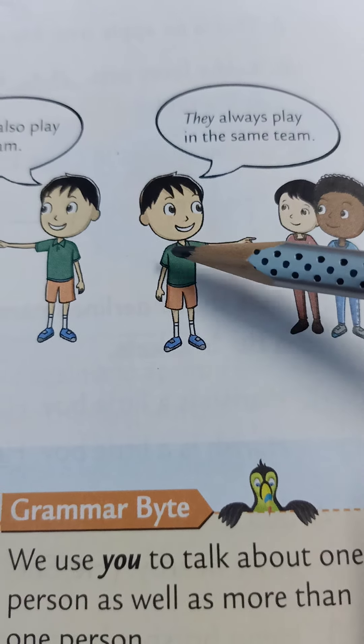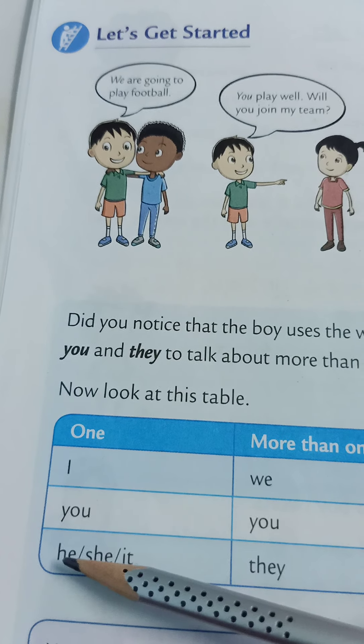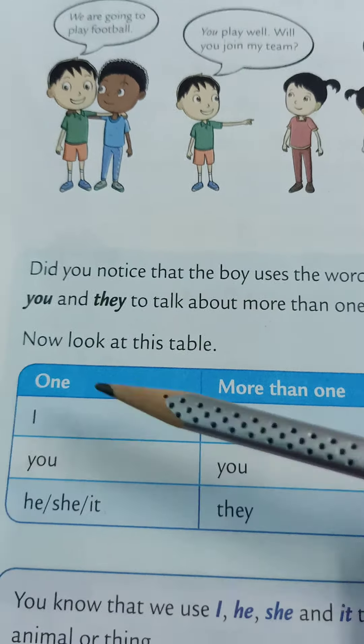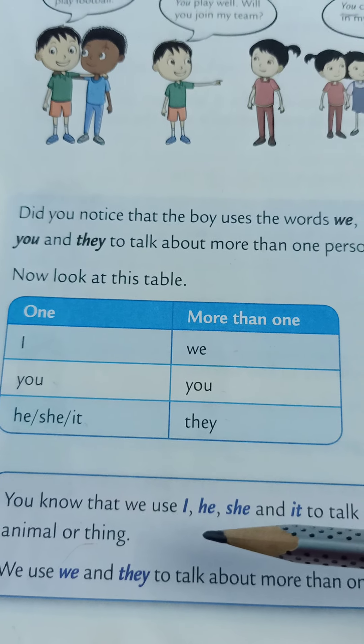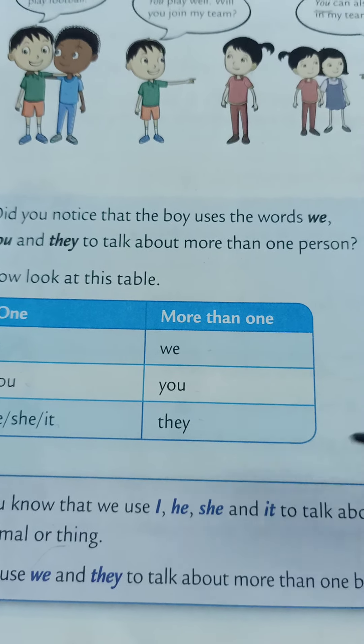Now look at this table. For one person: I, you, he, she, it — which we have already done in the last chapter. For more than one: instead of I, we use we; you stays the same; and instead of he, she, it, we use they. So we use I, he, she, and it to talk about one girl, one boy, man, woman, animal, or thing. And we use we and they to talk about more than one boy, girl, man, woman, animal, or thing.